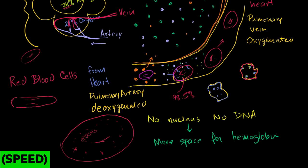By packaging the hemoglobin inside containers — inside the red blood cells — it allows the blood to flow a lot better. Imagine if you wanted to put syrup in water: if you put syrup straight into water, the water becomes a little syrupy, a little more viscous, and doesn't flow as well. The solution is to put the syrup inside little beads and let the beads flow in the water, so the water wouldn't be gooey. That's exactly what's happening in our blood — hemoglobin sits inside these beads we call red blood cells, allowing flow to remain non-viscous.